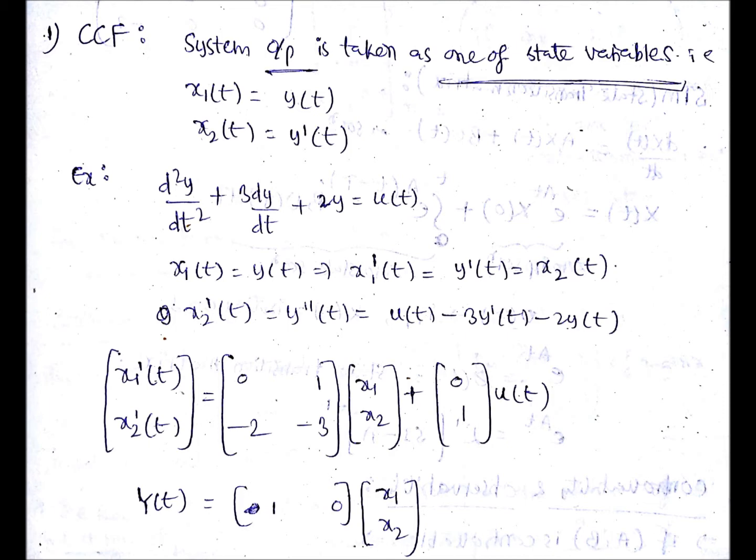With an example I will show you. If the equation is d²y/dt² + 3dy/dt + 2y = u(t), then you choose x₁(t) = y(t) and x₁'(t) will be y'(t) which is nothing but x₂(t).